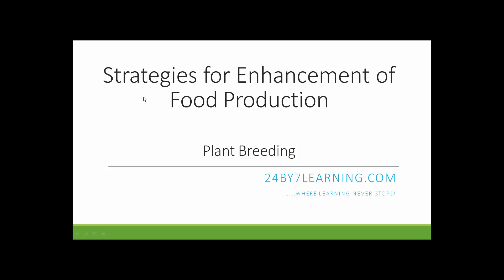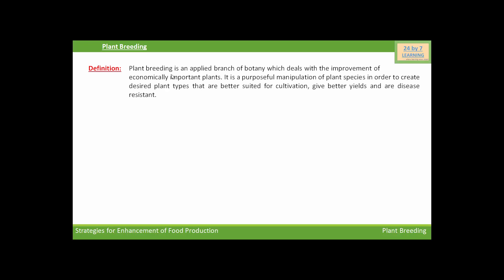Hello students. In this lesson you will find strategies for enhancement of food production, and in this section you will learn about plant breeding. Plant breeding is an applied branch of botany which deals with the improvement of economically important plants. It is a purposeful manipulation of plant species in order to create desired plant types that are better suited for cultivation, give better yields, and are disease resistant.